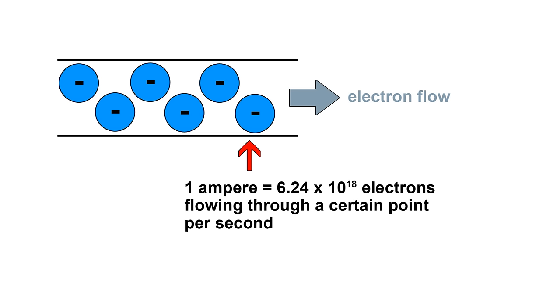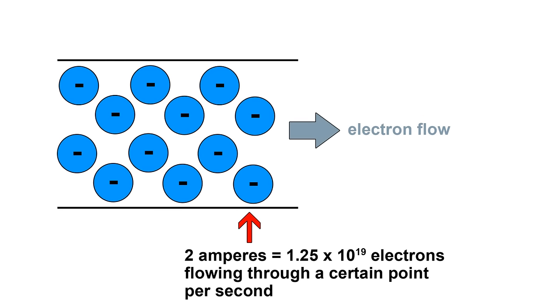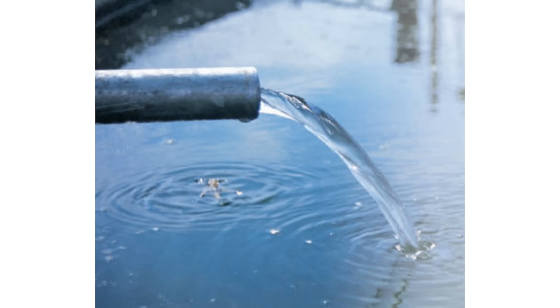You don't really need to memorize that number, but you should understand that electrical current refers to the amount of electron flow, and that one amp means that a lot of electrons are flowing. And obviously two amps means that twice the electrons are flowing. And if you want, you can use the analogy of the amount of water flowing through a pipe.